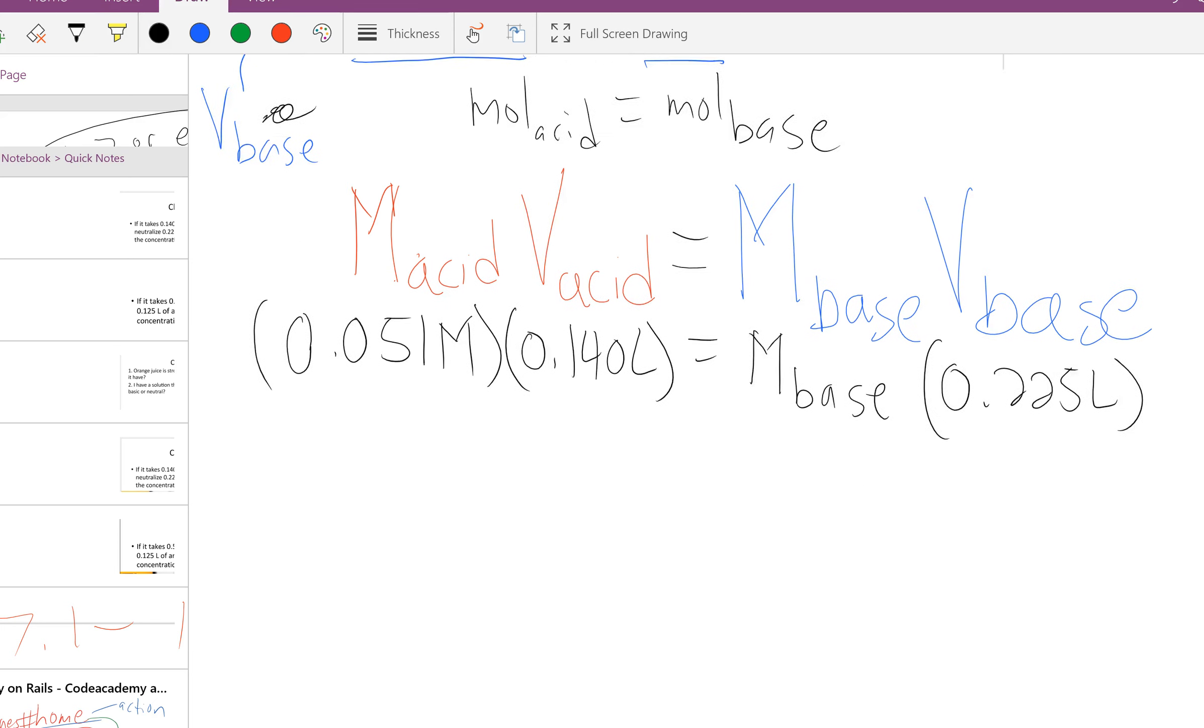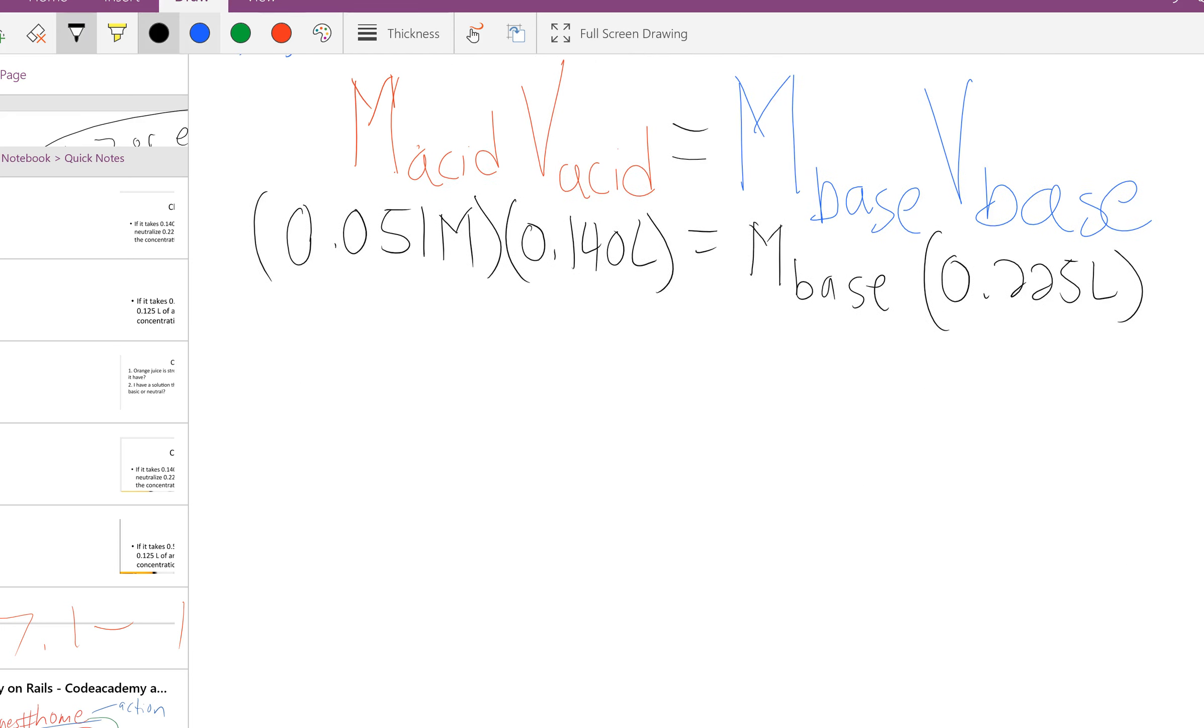If I have all this, I only have one variable to deal with, molarity of the base. To get molarity of the base by itself, I'm going to divide by the thing that it's being multiplied by, 0.225 liters, which allows me to cross it out as long as I divide the other side by the same thing.